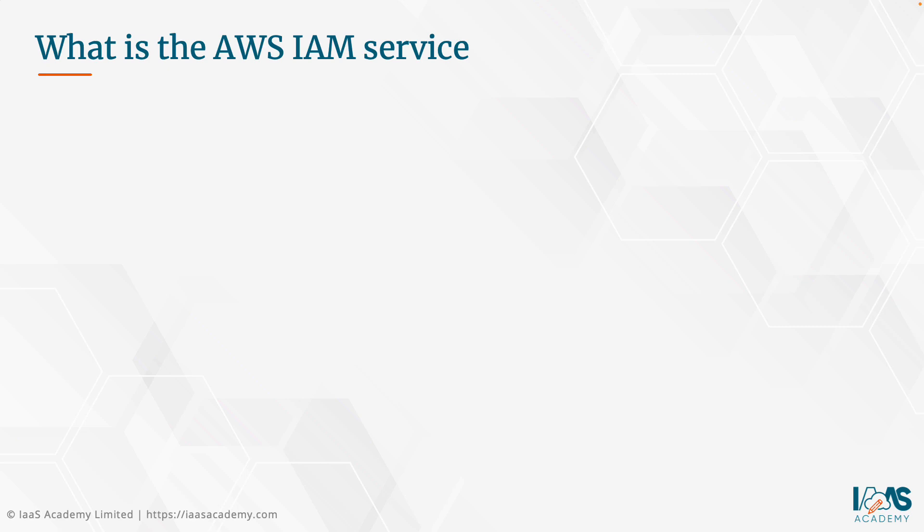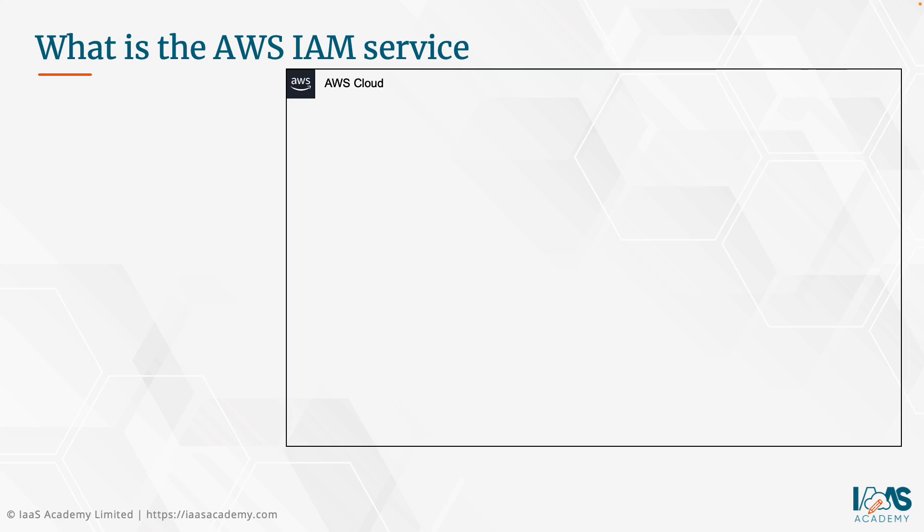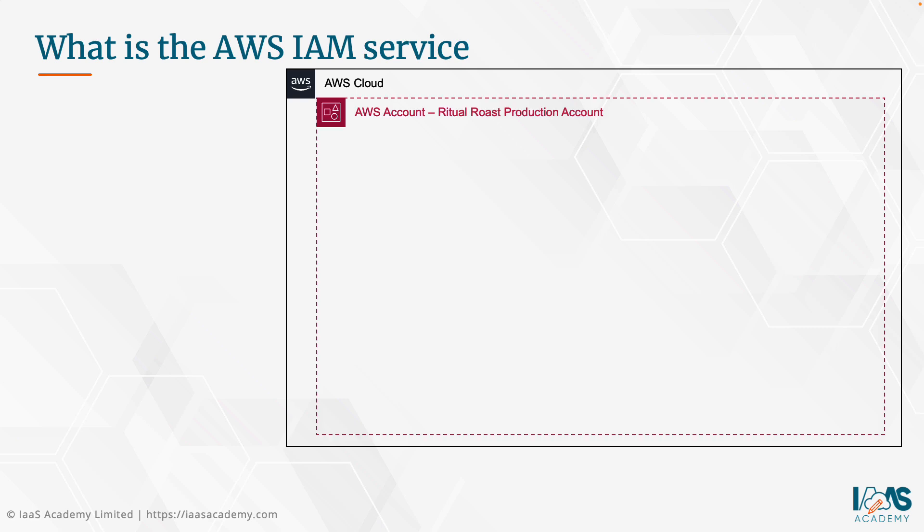Let's start off by taking a look at the AWS Identity and Access Management Service, also known as IAM. This was the original identity and access management solution that AWS offered. When it comes to IAM, you have the AWS cloud, and you would need to create an AWS account within which you have a vast array of services — compute, network, storage, databases — to create resources and host your applications.